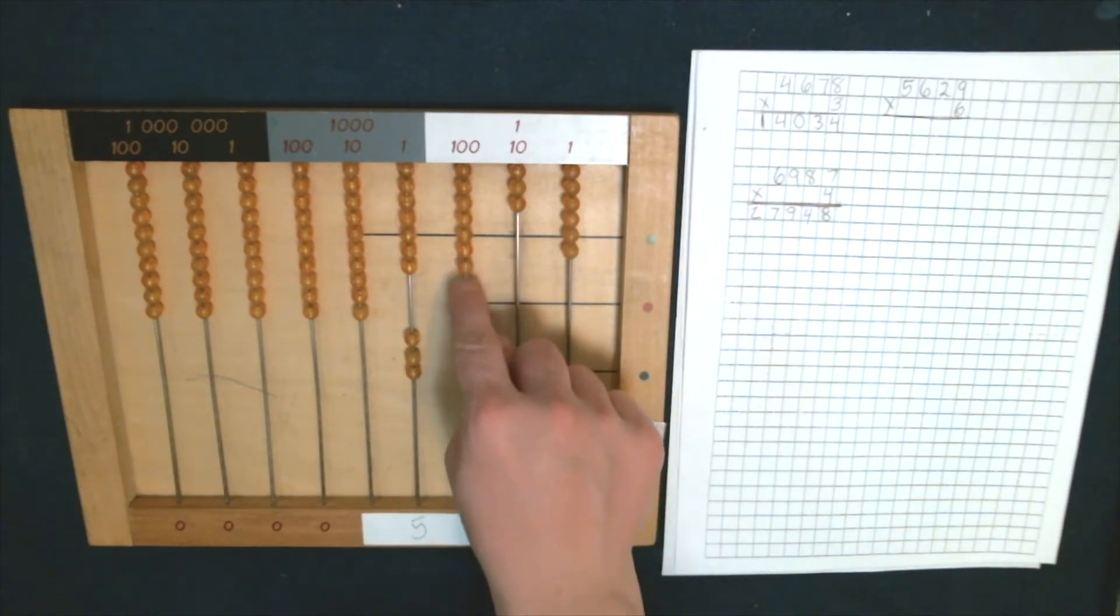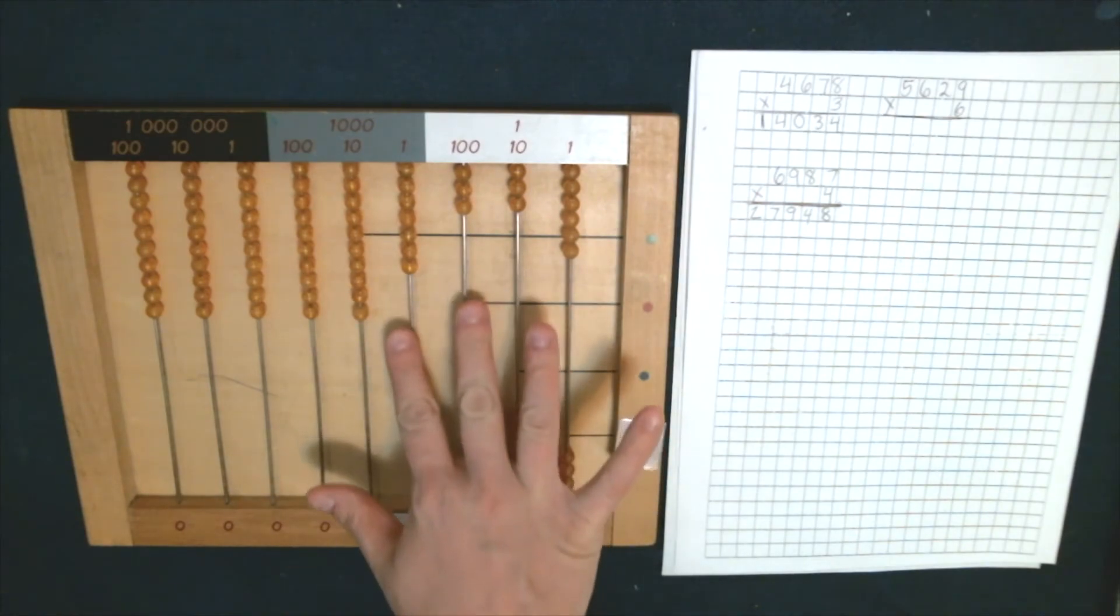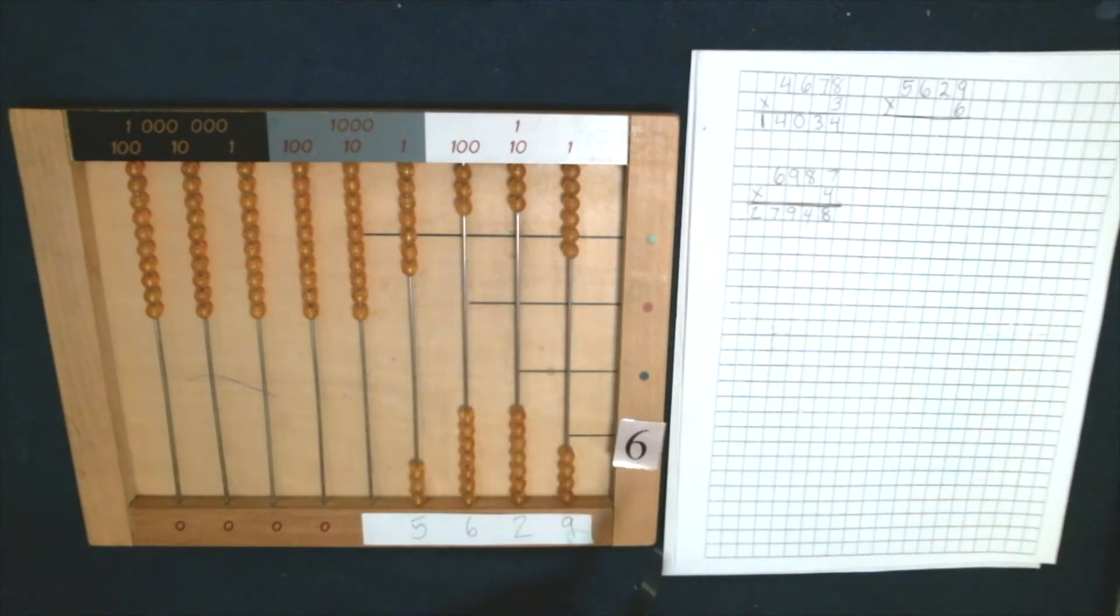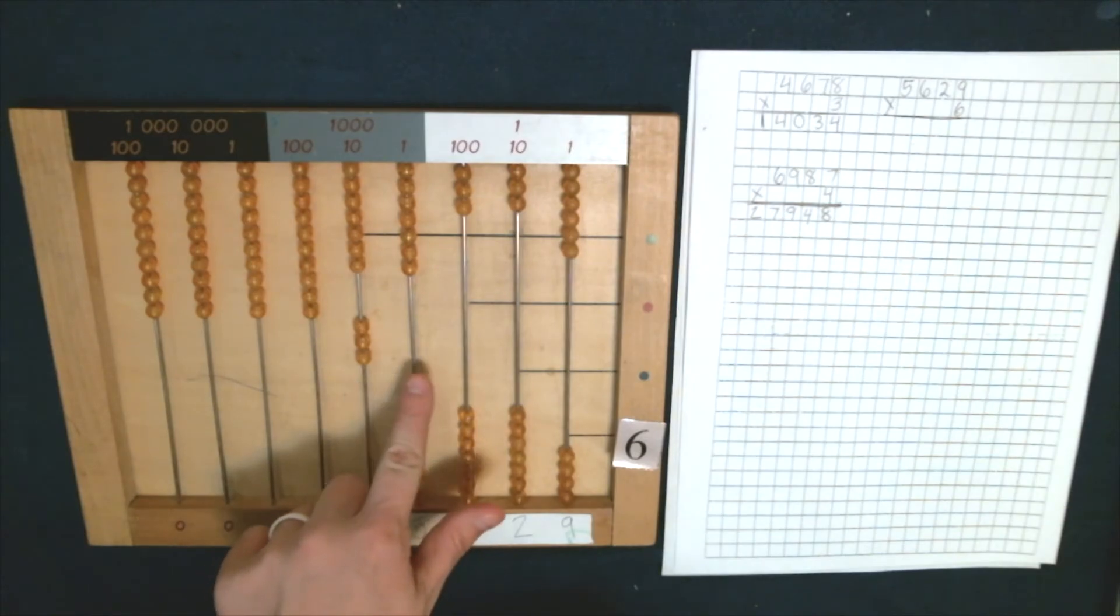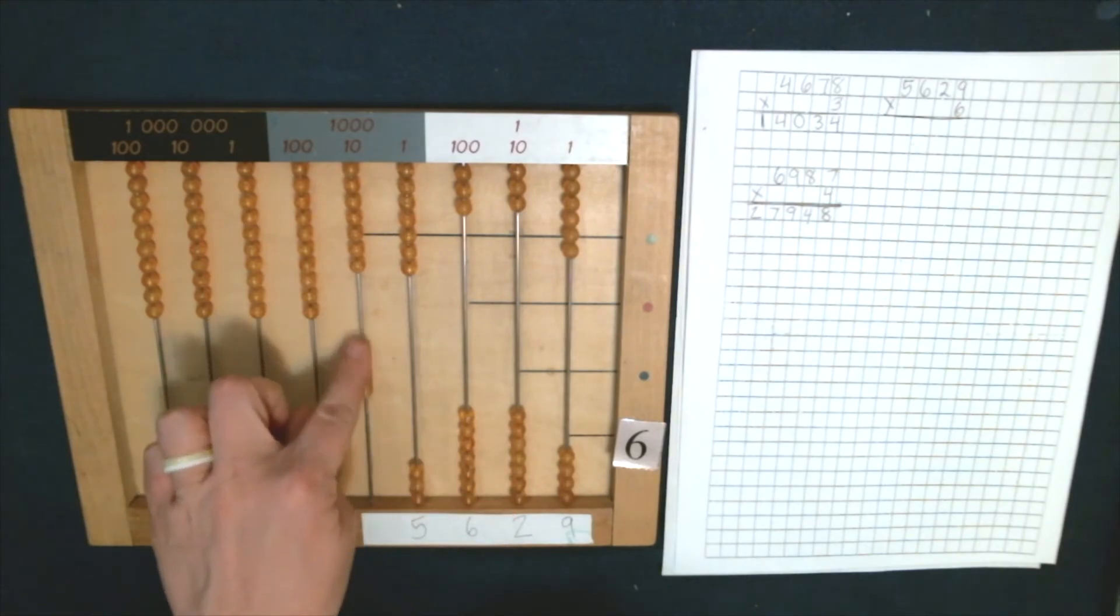Six times six is 36. Then six times five, that's 30. So here's 30, three zero. Let's write down our answer.